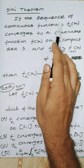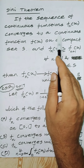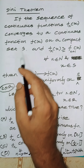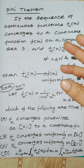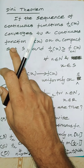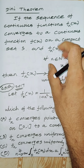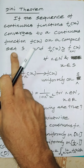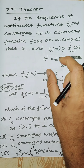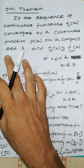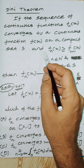If the sequence of continuous functions fn(x) converges to a continuous function f(x), and importantly, the compact set is closed and bounded — set S — and fn(x) is greater than or equal to f(n+1)(x), satisfying the monotonic condition.